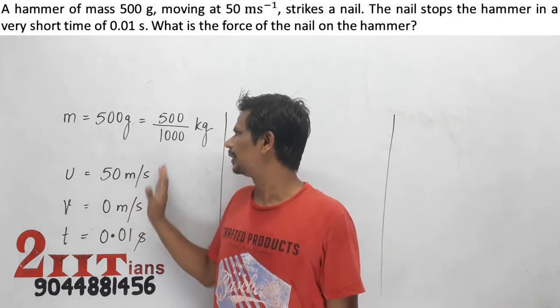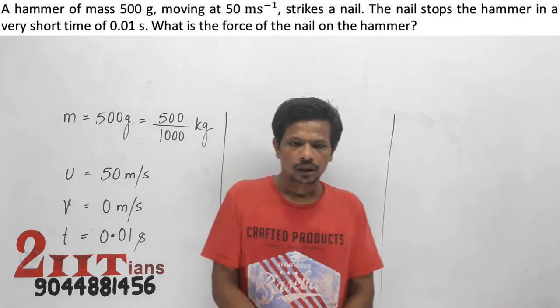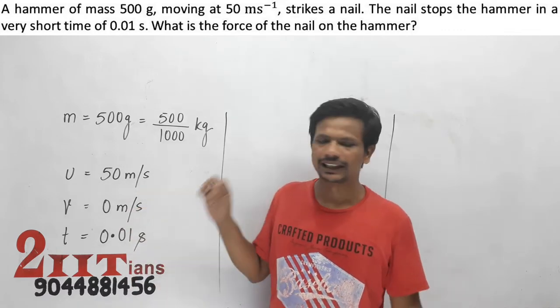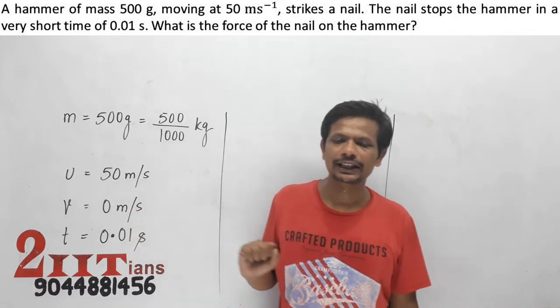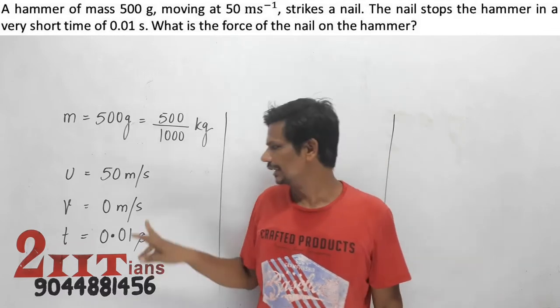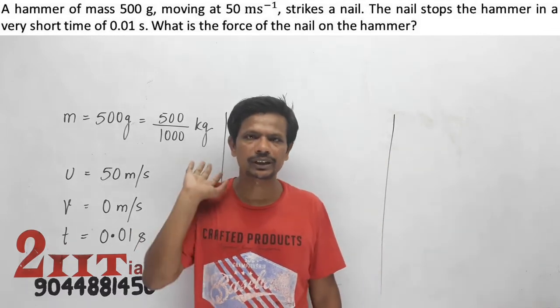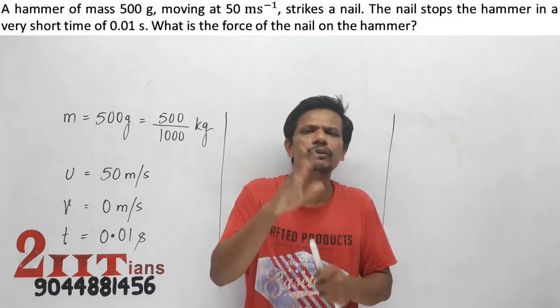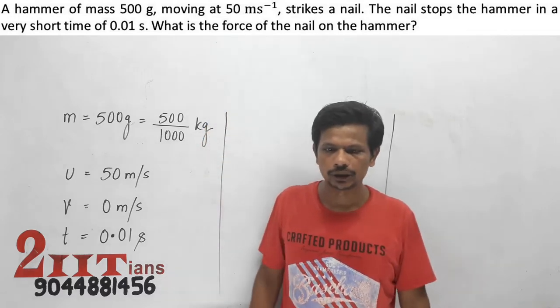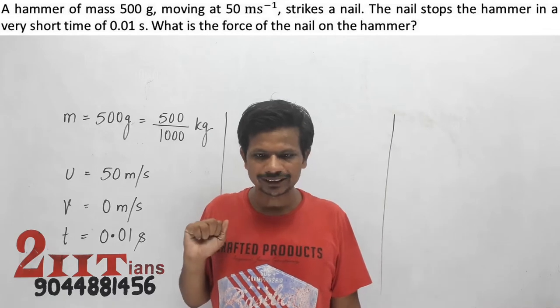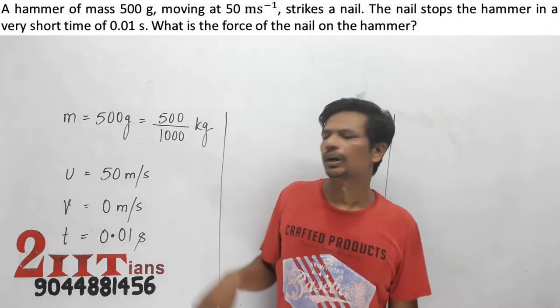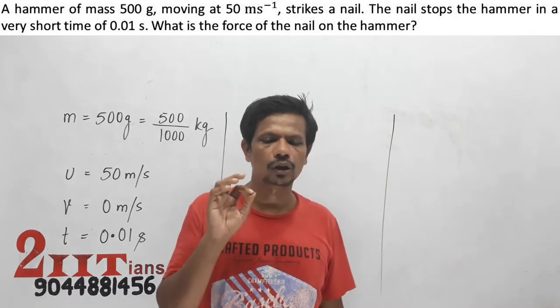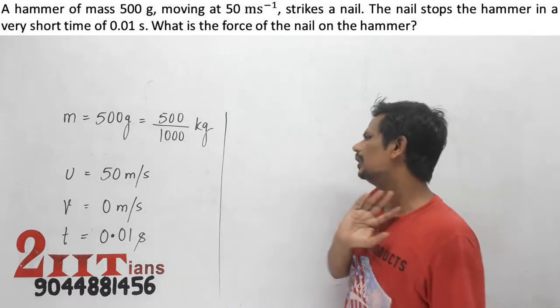A hammer of mass 500 grams moving at 50 meters per second strikes a nail. The nail stops the hammer in a very short time, 0.01 seconds. What is the force of the nail on the hammer?